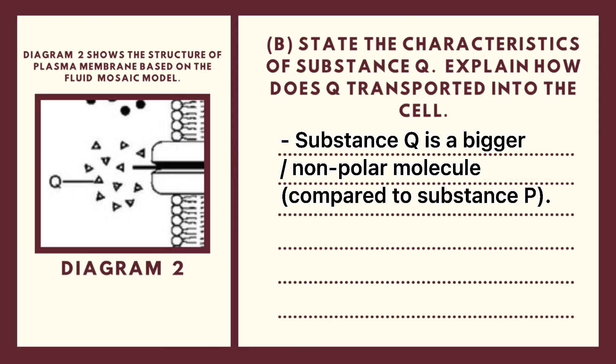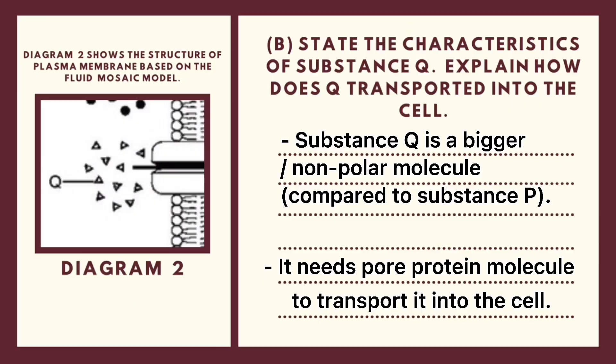Or maybe, you can explain that substance Q is a bigger or non-polar molecule compared to substance P. As we answer before, substance P is a small substance. It is a small molecule. So, it can move into the truth of the phospholipid easily. But in this case, substance Q is a bigger than substance P. So, it cannot move into the cell through the phospholipid easily. It needs pore protein to transport it into the cell.